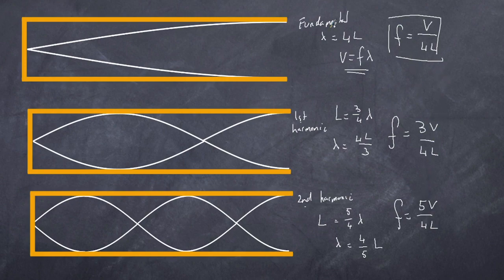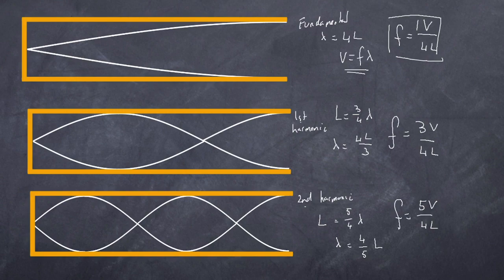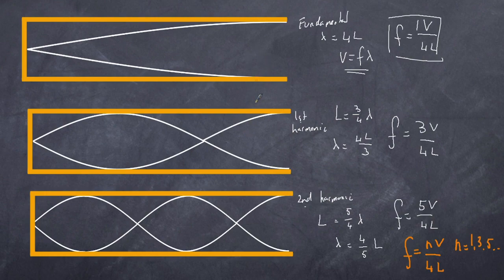Do you see the pattern? There's a commonality: v / 4L, but the n values — the numbers in front — are 1, 3, and 5. So for a closed pipe, the general formula is f = nv / 4L, where n takes only odd numbers: 1, 3, 5, and so forth. This is a little different from the situation with strings.